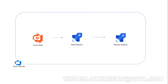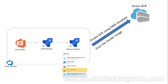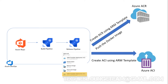Hello guys, welcome back to the session. This is the sixth video in this series. Here we are going to create the release pipeline. First we will be creating the container registry, then we will build and push our container image to the container registry, and finally we will create our container instance and deploy our Docker image from container registry to it.